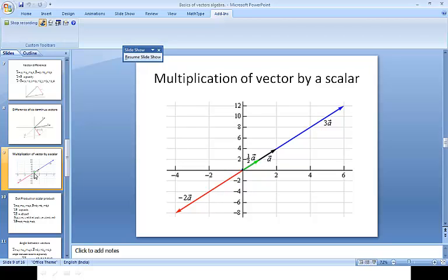Now multiplication of a vector by a scalar. That black vector shown in the diagram is vector A. The green one is half A, the blue one is 3A, and the red one is -2A. So if you multiply a vector by a scalar, the direction remains the same and only the magnitude is multiplied. If you multiply by a negative scalar, the direction is reversed as in the case of -2A.